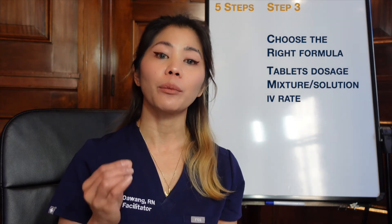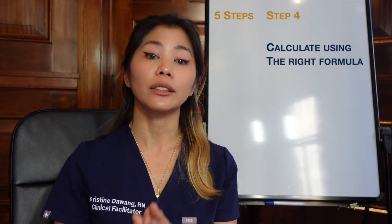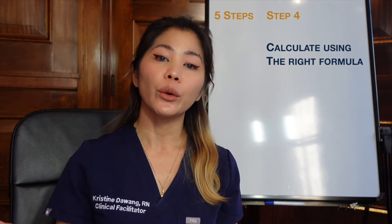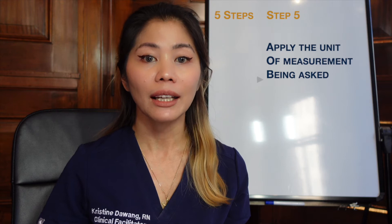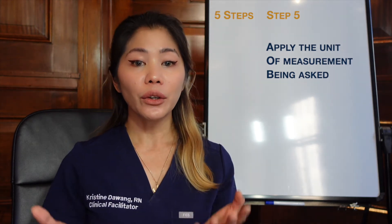The third step is to choose the formula according to the numbers at hand. Ask yourself: is this a tablet dosage, a mixture or solution, or is it an intravenous medication? That will help you identify which formula to use. The fourth step is to calculate using the formula — having the right formula allows you to calculate drug doses easily. The fifth and last step is to check the unit of measurement being asked, because even with correct numbers your answer will be wrong if you use the wrong unit.